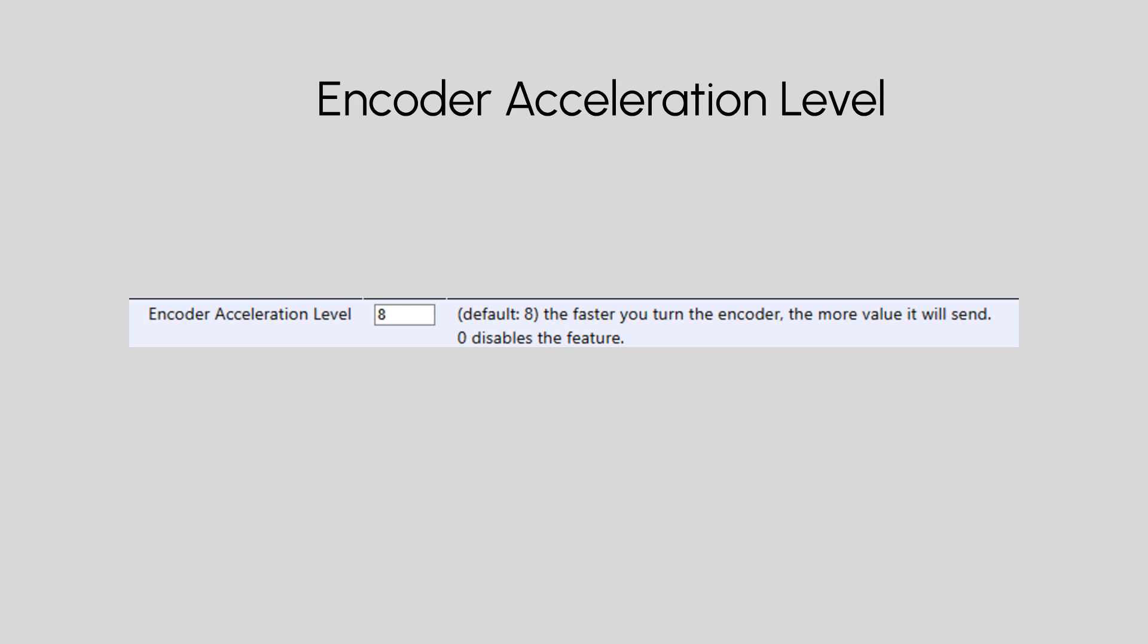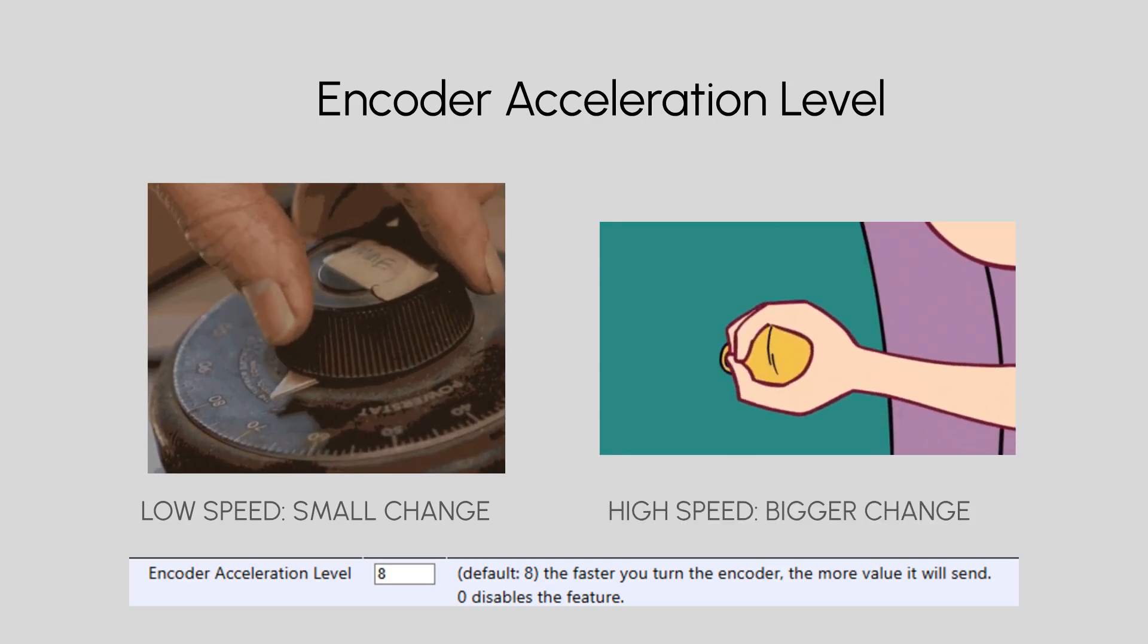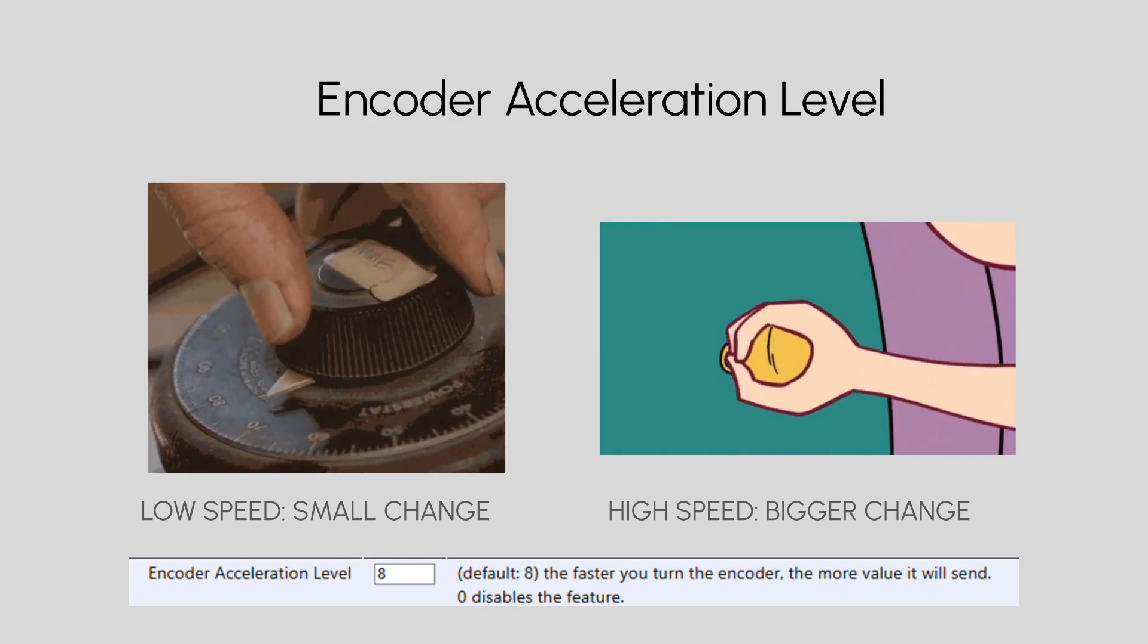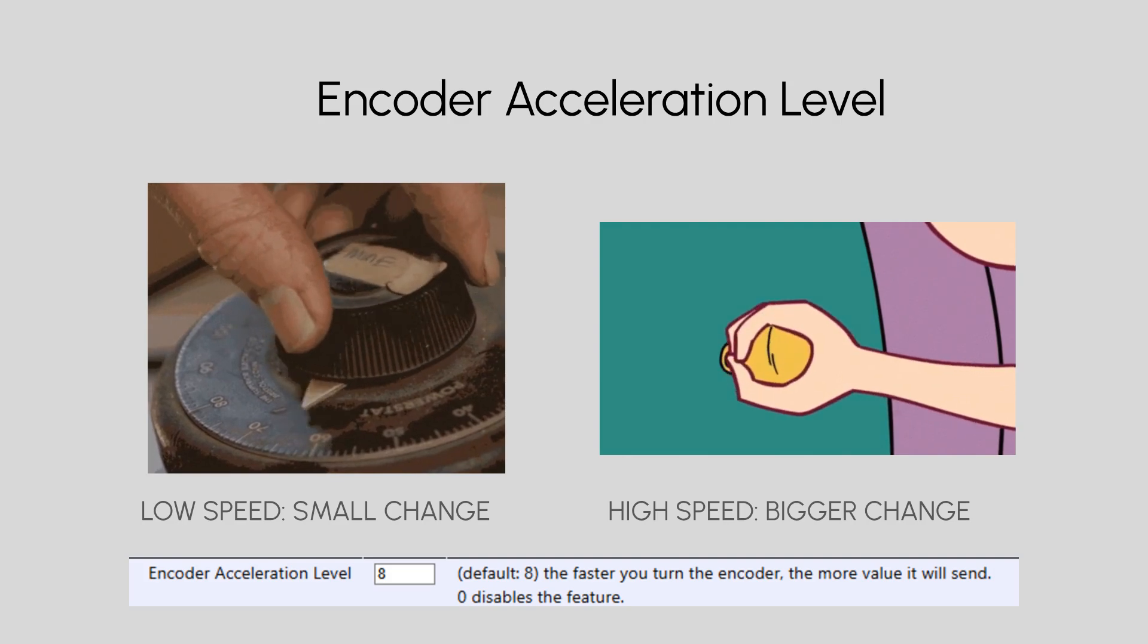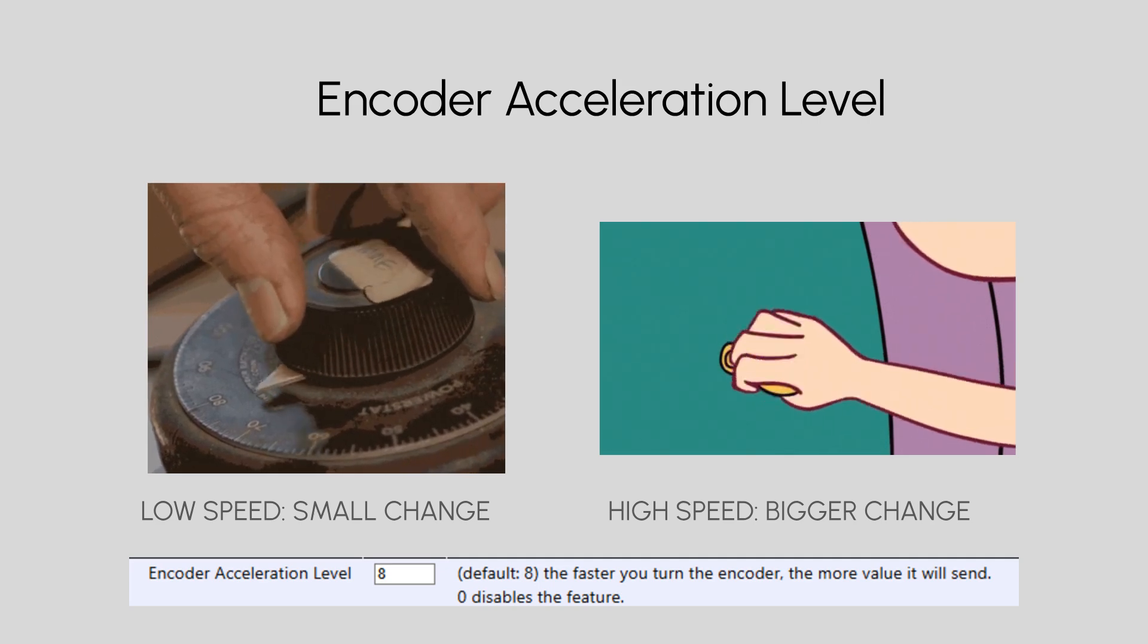Encoder acceleration level is now available. The default value is 8. The encoder acceleration feature determines how quickly values are sent when turning the encoder. The faster you turn the encoder, the more values are sent, making large adjustments quicker and more efficient. If you prefer precise and consistent adjustments, you can disable acceleration by setting the value to zero. When acceleration is disabled, the encoder will send the same number of values regardless of how fast you turn it. This feature can be adjusted in the global variables tab, allowing you to customize it based on your needs.